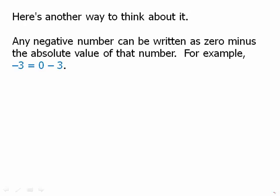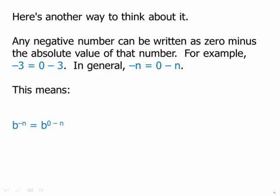Here's another way to think about it. Any negative number can be written as 0 minus the absolute value of that number. For example, negative 3 as 0 minus positive 3. In general, negative n we could write as 0 minus n. This means that b to the negative n we can think of as b to the 0 minus n. Well, if we have subtraction in the exponents that means divide the powers, so that must mean b to the 0 divided by b to the n, and of course b to the 0 is 1, so this would be 1 over b to the n.